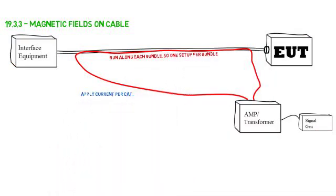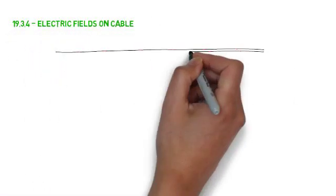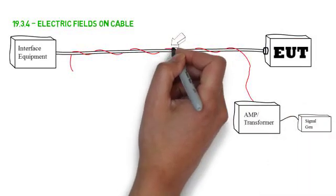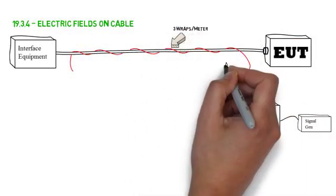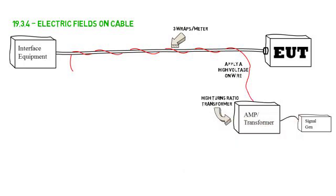For electric fields on the cable, wrap a high voltage wire around the cable a minimum of 3 wraps per meter. Apply a voltage to the wire in accordance with the category. This high voltage is usually achieved with an audio amplifier and a high ratio transformer.